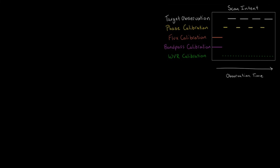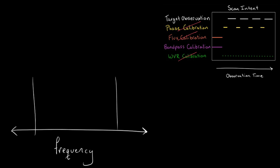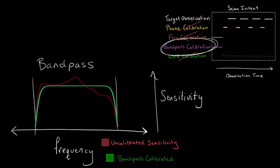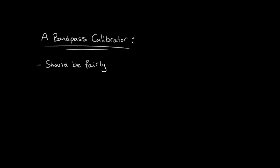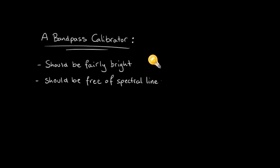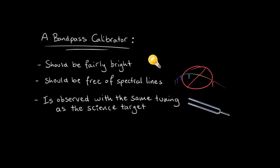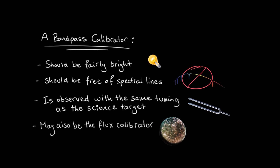Finally, we need to correct for the difference in the relative sensitivities as a function of frequency across the bandpass using bandpass calibration. Similar to flux calibration, bandpass calibration requires observations of bright sources with no spectral lines, using the same tuning setup as the science target. This is used to correct for frequency-dependent variations in amplitude and phase. If the flux calibrator is bright enough, it can also be used as a bandpass calibrator.